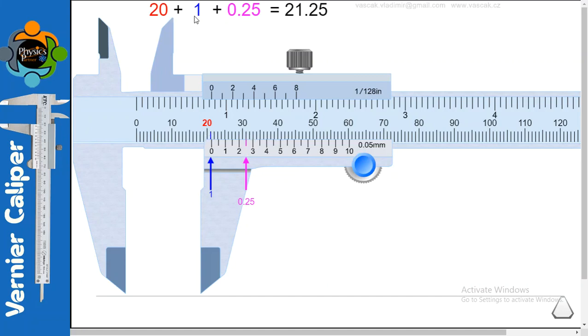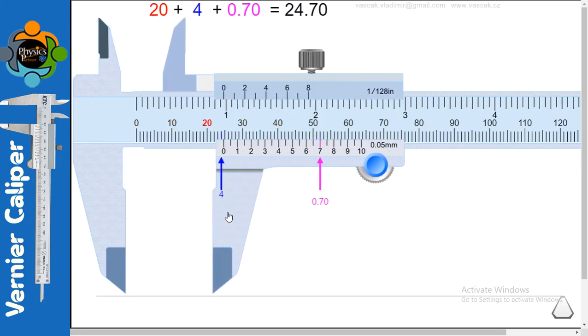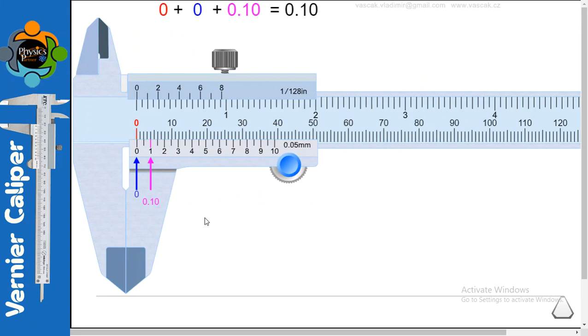First of all the main scale reading which is 20 and it crosses one also, so 21 - the blue line. And you have to see the most matching line which is 0.25. So this will be the reading: 21.25 will be the reading on this scale, which is showing the length of this object is 21.25. I hope you understand that it's very easy, very simple, very precise measuring device to find the length, internal diameter, external diameter.